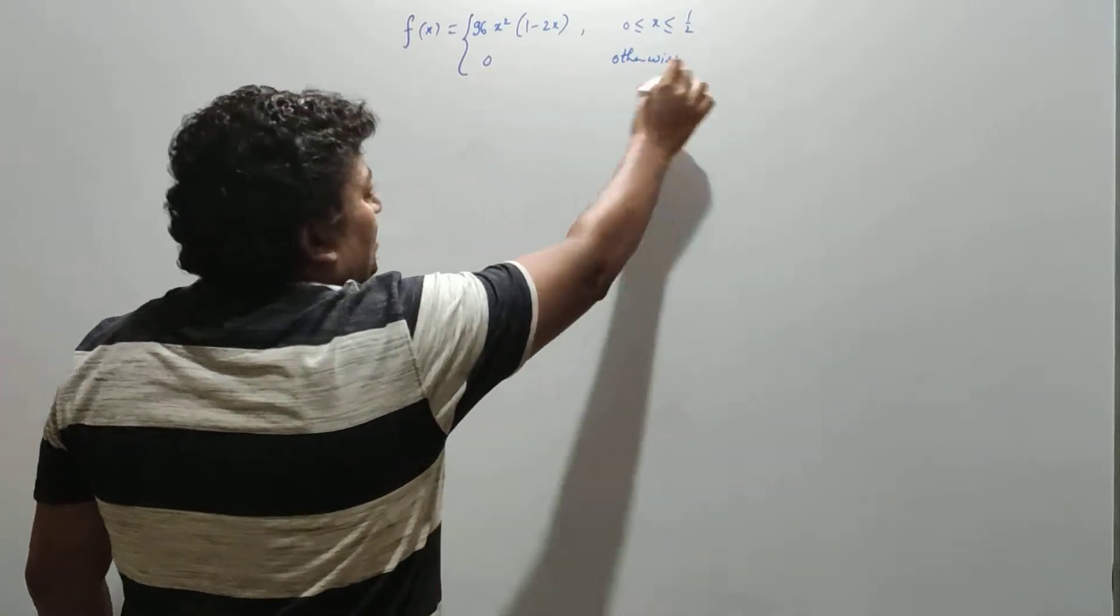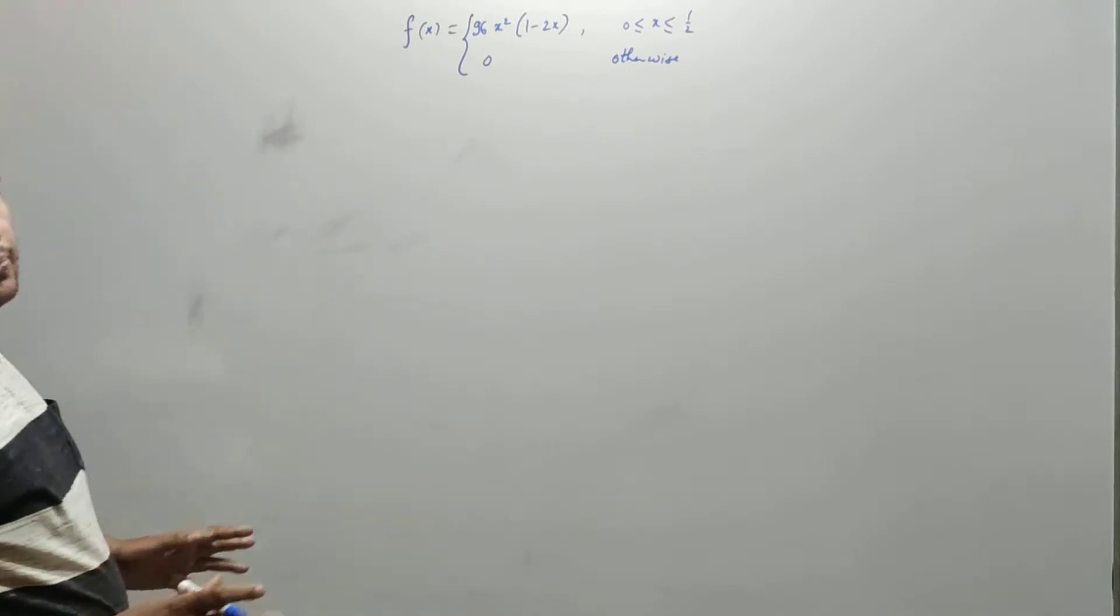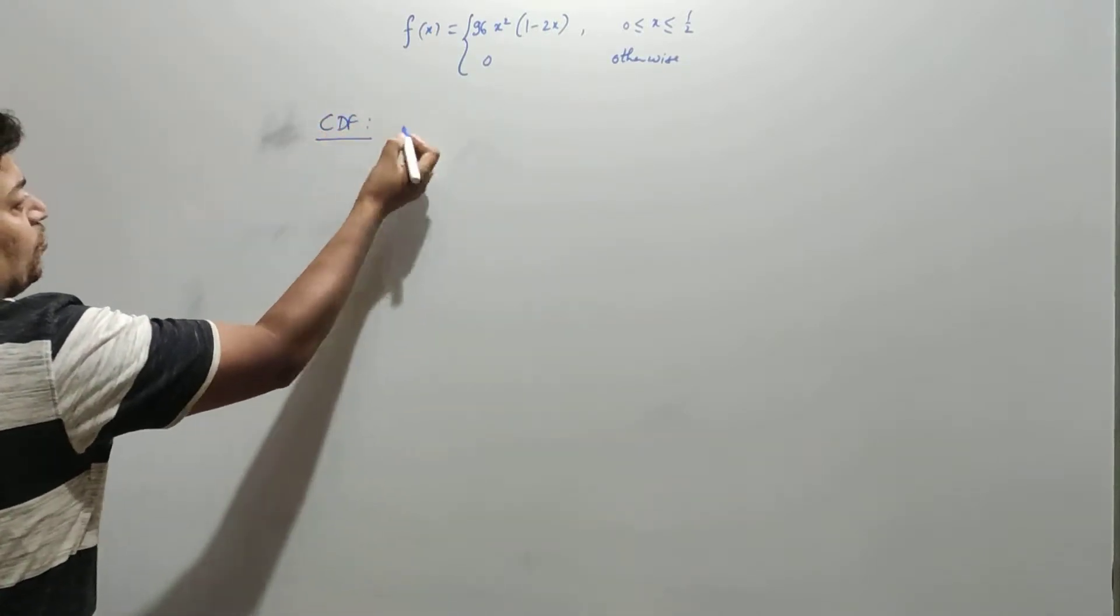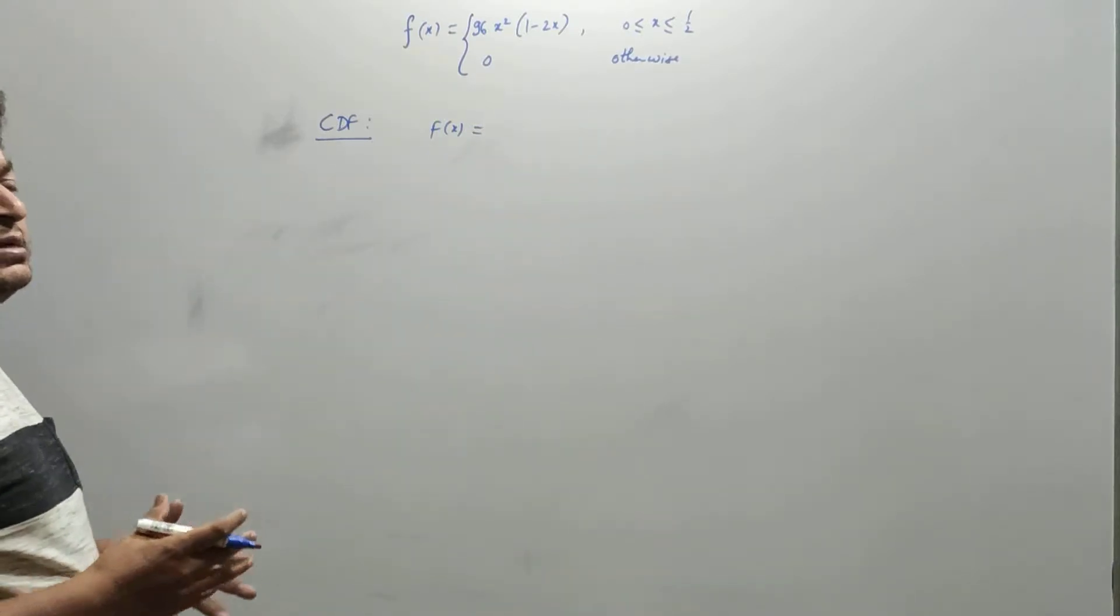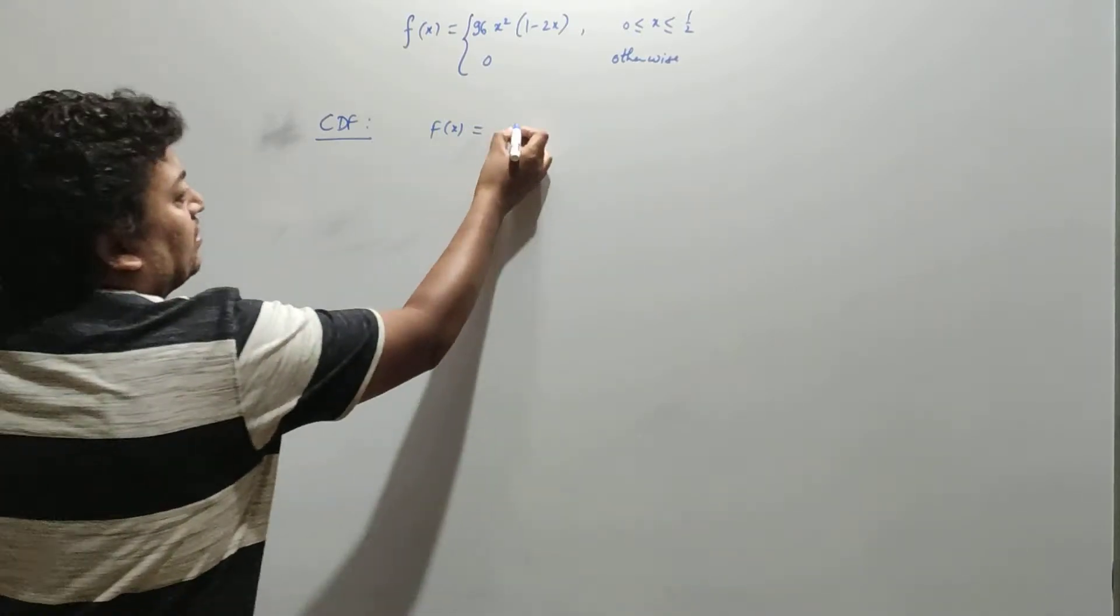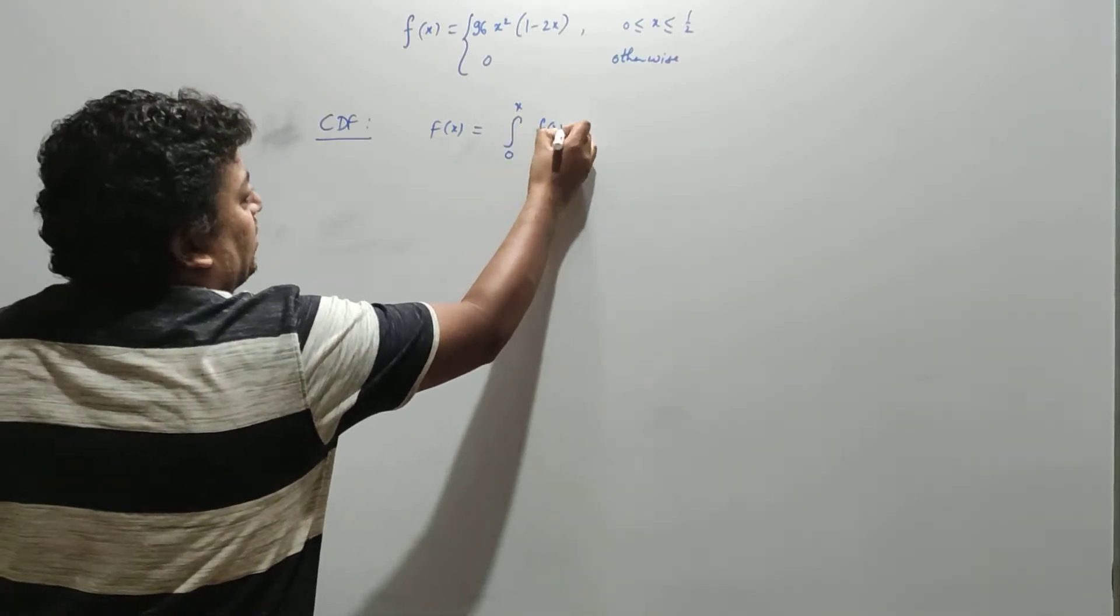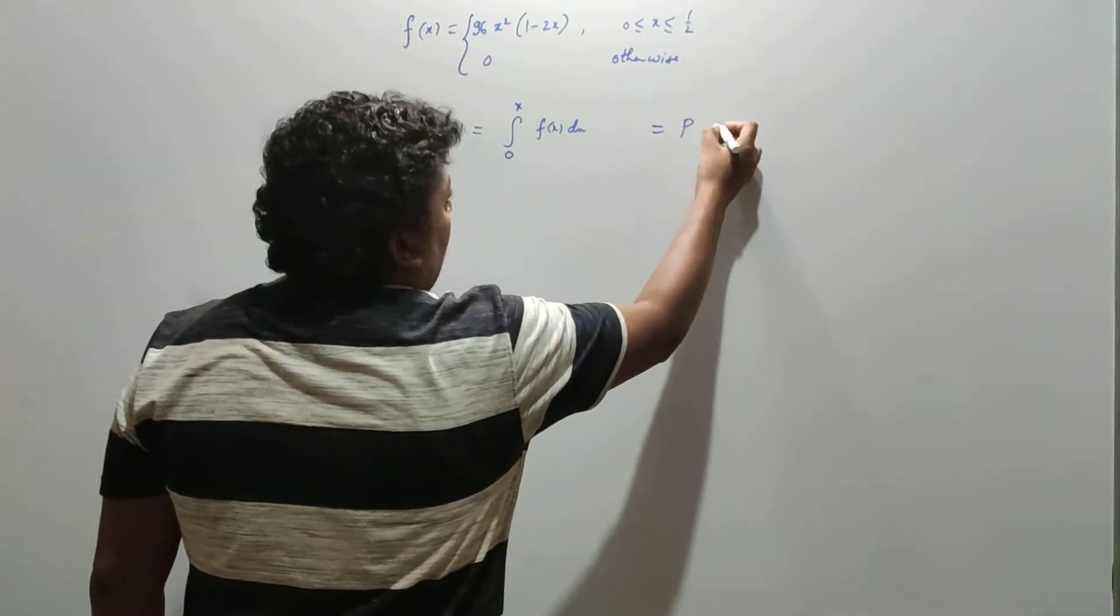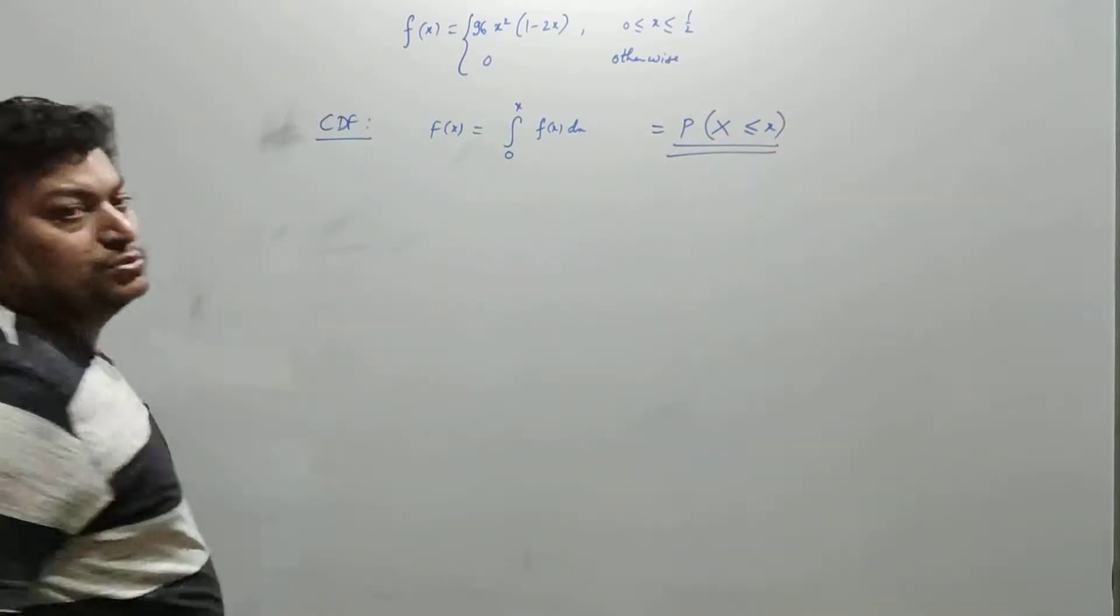Now in this video we're going to understand how to find the CDF. CDF is found by this formula: the integral from 0 to x of f(x)dx. As I said, CDF is the probability that the random variable is smaller than a certain value.